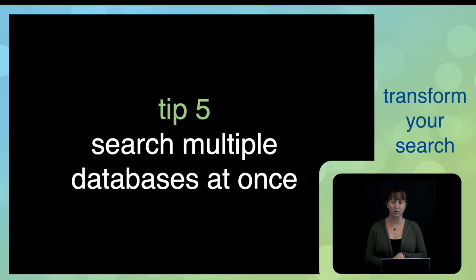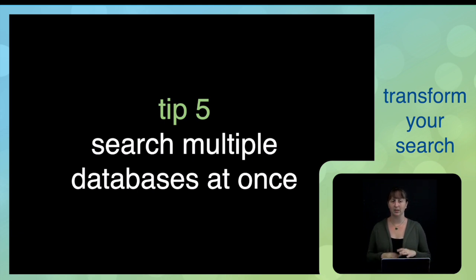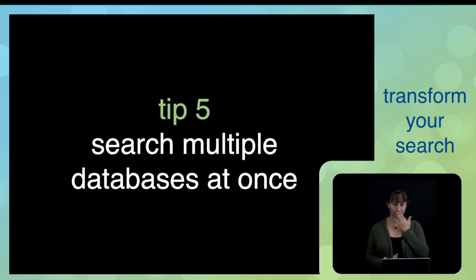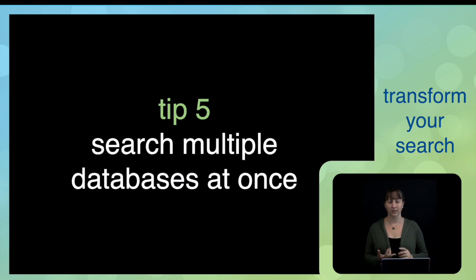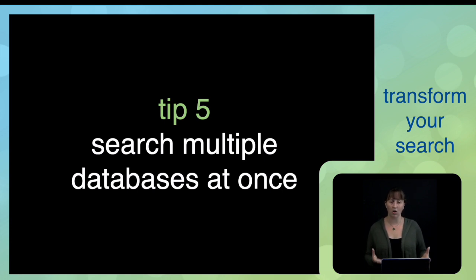Tip five: search multiple databases at once. On our EBSCO database platform, which accounts for about 20 percent of the databases we use here at UMB Libraries, it's possible to search multiple databases simultaneously. For this research question, I'd want to look for databases in psychology, occupational therapy, and probably medicine. We have databases on all of those topics on the EBSCO platform — in this case PsycInfo, SportDiscus, and CINAHL. I'll show you how to do all of this and use all of the previous tips on that platform in just a minute or two.